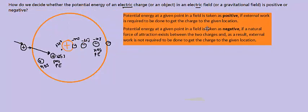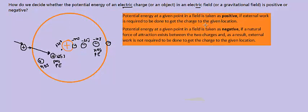This is the convention that is used: potential energy at a given point in a field is taken as positive if external work is required to bring the charge to that location. It is given a negative value if a natural force of attraction exists between the two charges, and as a result external work is not required. So, if there is a natural force of attraction, potential energy is negative; if there is no natural force of attraction, potential energy is positive.